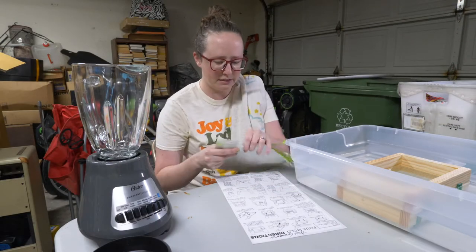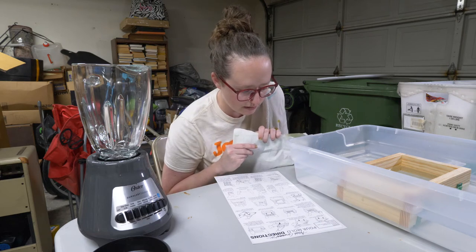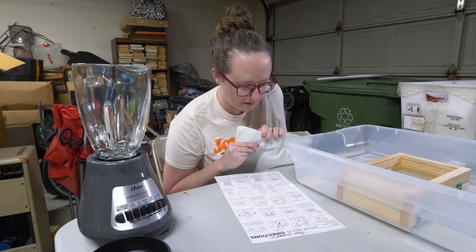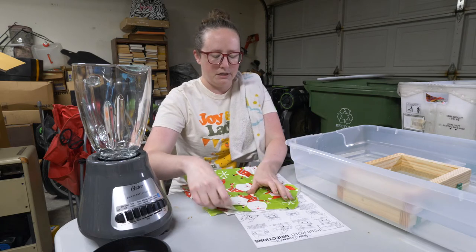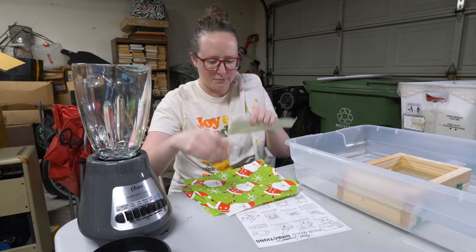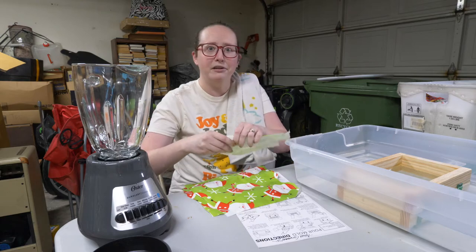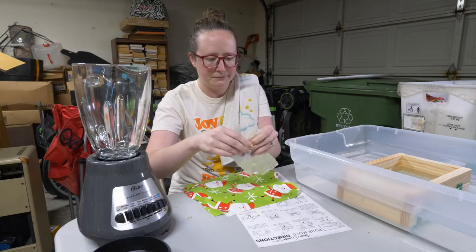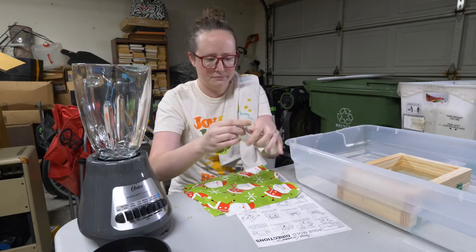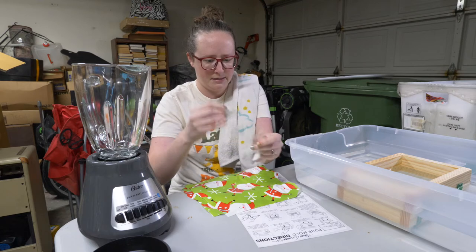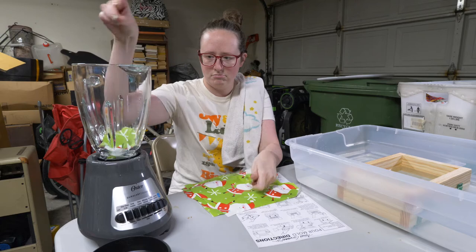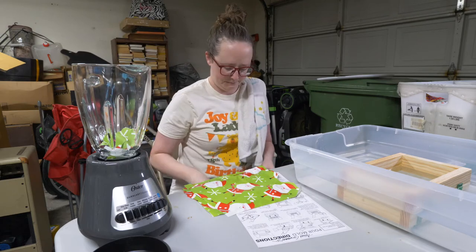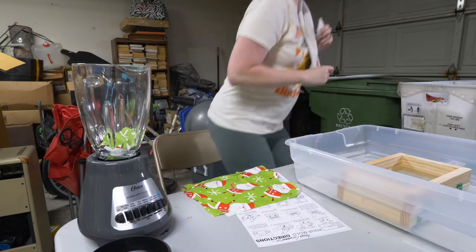Now that we've got our paper, it says to tear it into pieces and blend in the kitchen blender with two cups of water for 30 seconds. Okay, we'll tear it up as small as you can. I thought I had another little piece of tape on there. Actually, I'm going to start some water in here.